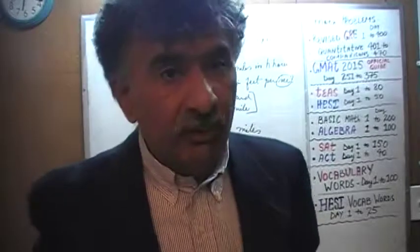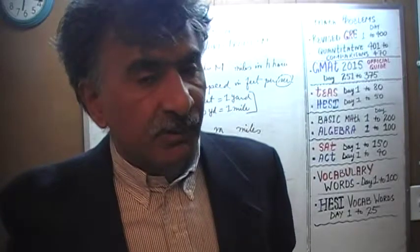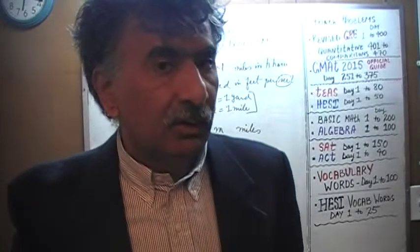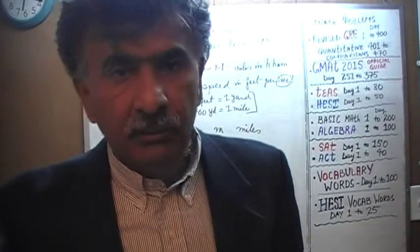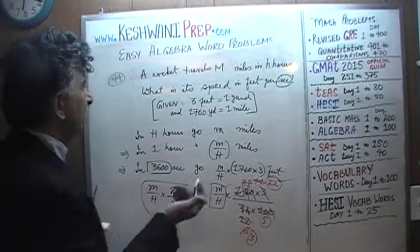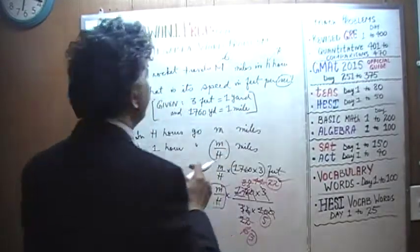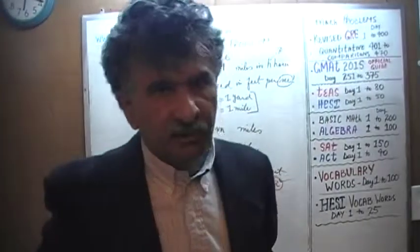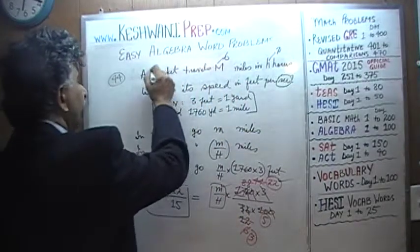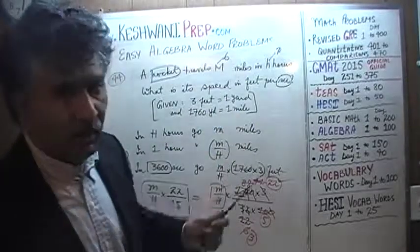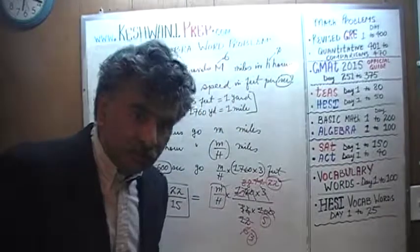We're not quite done yet — we need to verify our answer, as always. How do we verify an algebraic answer? By converting the algebraic problem into an arithmetic problem — by plugging in numbers for the variables. Let's make up a speed: six miles every two hours, which is three miles per hour. Just pretend the rocket is actually a donkey named Rocket that goes three miles an hour.